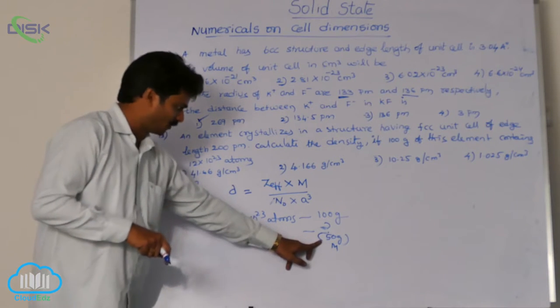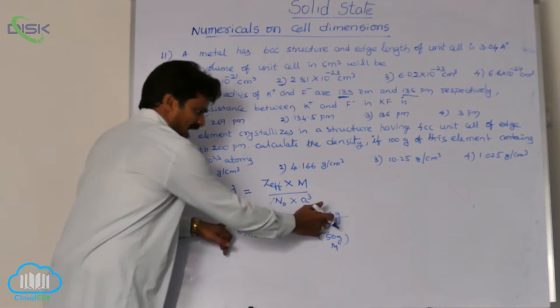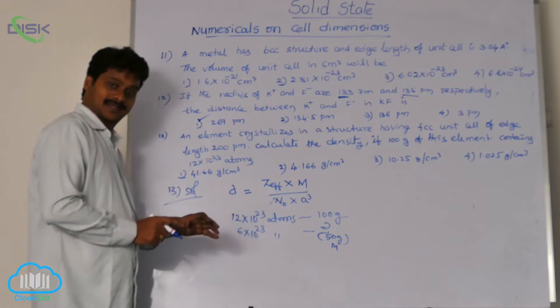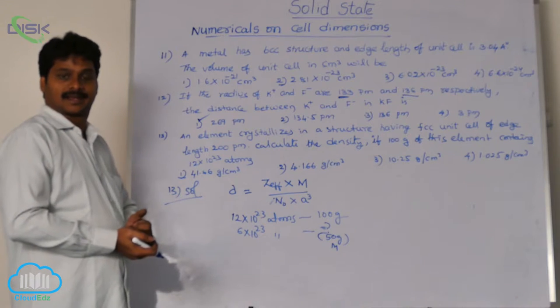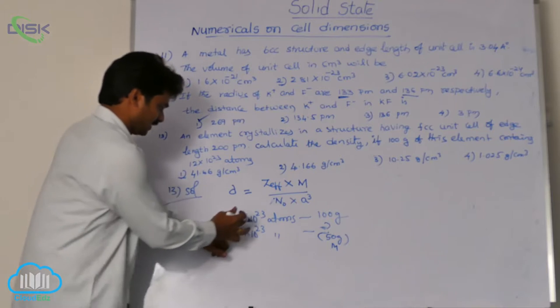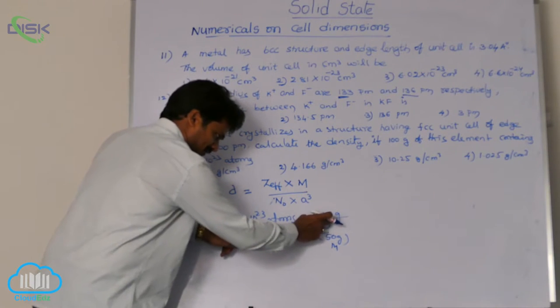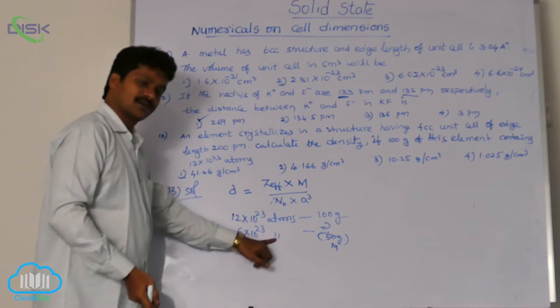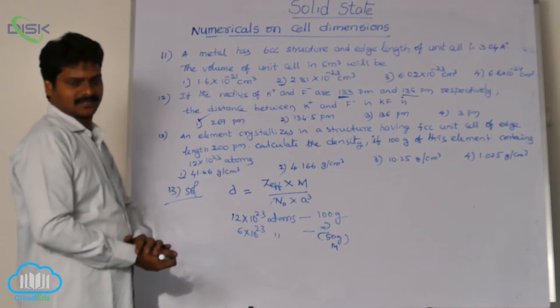Have we got how it is 50? So as per the question these number of atoms have mass 100 grams. You know it is the double of Avogadro number. We know that the Avogadro number of atoms of metal has mass equal to atomic weight, gram atomic weight. So here it is double the Avogadro number. For double the Avogadro number if 100 grams mass, for Avogadro number of atoms how much mass? 50. Avogadro number of atoms is nothing but gram atomic weight or molar mass.